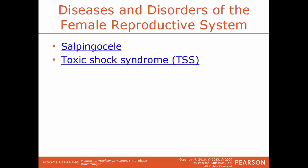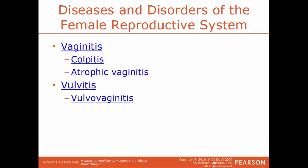Salpingocele is a herniation of the fallopian tube. TSS, toxic shock syndrome, is an acute septicemia in women and is a life-threatening condition. Vaginitis is the inflammation of the vagina, also known as colpitis. Atrophic vaginitis is inflammation of the vagina caused by the thinning and shrinking of vaginal tissues. Vulvitis is an inflammation of the vulva, and vulvovaginitis is an inflammation of both the vulva and the vagina.